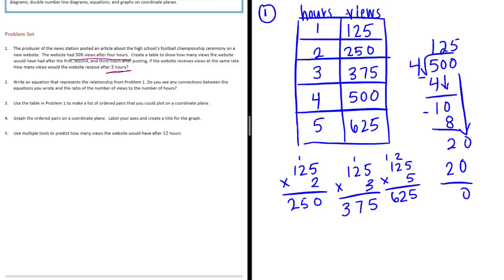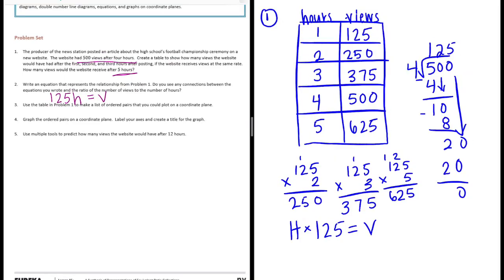Number two: write an equation that represents the relationship from problem one. Do you see any connections between the equations you wrote and the ratio of the number of views to the number of hours? So we need to write an equation. What we were doing was the number of hours times 125 got us the views, or we could say 125h equals the views. So the connection that we see is that if you multiply the hour by 125, you'll get the number of views that you would have for that length of time.